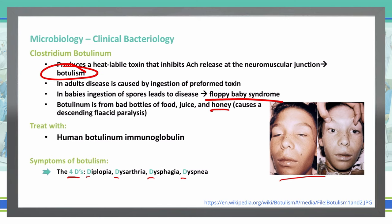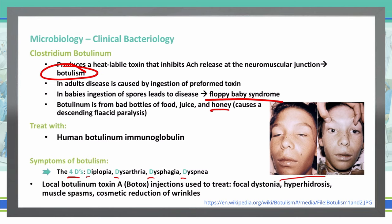Something interesting about Clostridium botulinum is that we actually use it to treat things. One of the most common uses you've probably heard of is cosmetic procedures — Botox — which helps reduce wrinkles by inhibiting acetylcholine release at the neuromuscular junction, decreasing contraction of those muscles and reducing wrinkle formation. We also use it for focal dystonia, hyperhidrosis, muscle spasms, and cosmetic reduction of wrinkles.